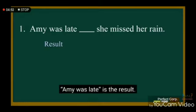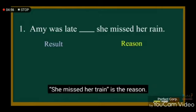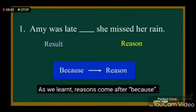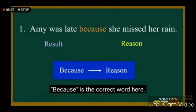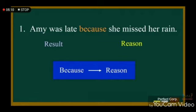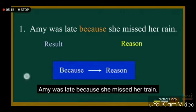'Amy was late' is the result; 'she missed her train' is the reason. As we learned, reasons come after 'because', so 'because' is the correct word here: 'Amy was late because she missed her train.'